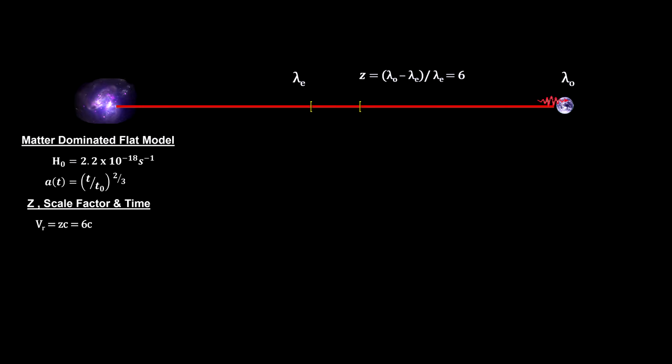First, redshift gives us an object's receding velocity. With our model, we have the object moving away at 6 times the speed of light.